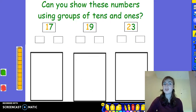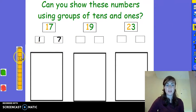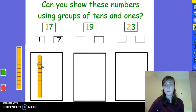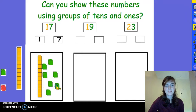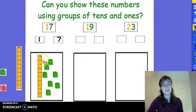Let's see if we can show these numbers using groups of tens and ones. Let's read the first number together. It's 17. I can see that I have 1 group of 10 and 7 cubes, 7 ones. Let's see if we can make that number using the cubes. Here's my group of 10.